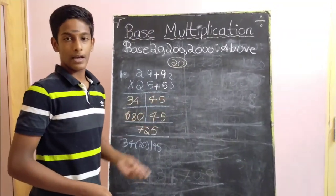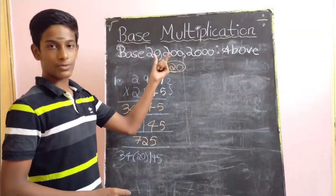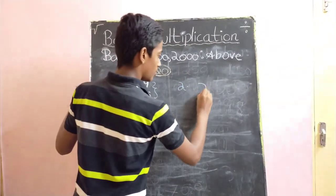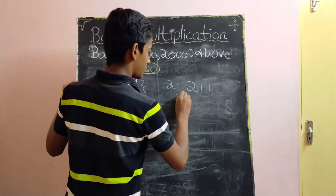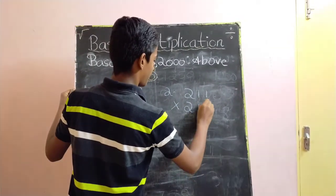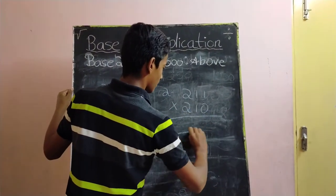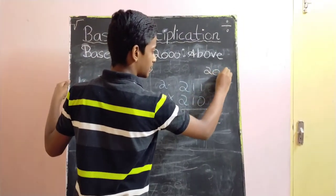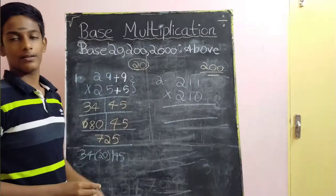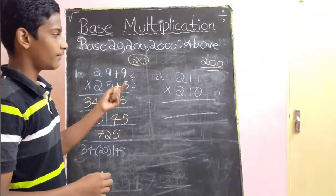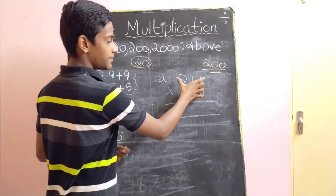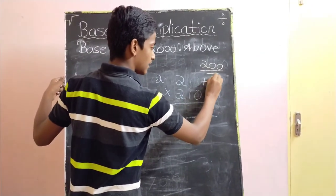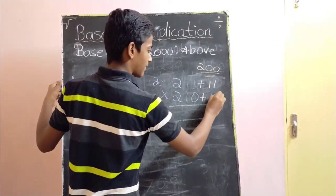Now let's look at an example with 200 as its base. Let's take 211 into 210. First, we have to identify the base number — here the secondary base number is 200. Then, we have to find the difference between 211 and 200, and 210 and 200. In this case, it is plus 11 and plus 10.